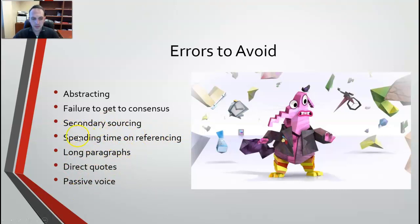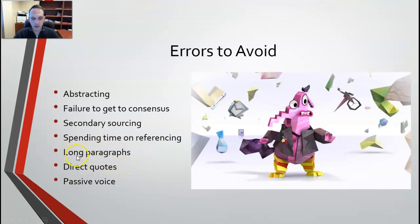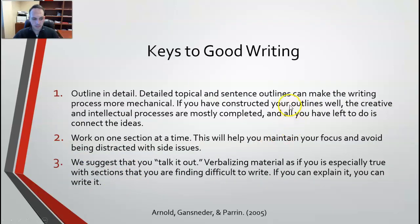Some more minor things: when writing at this point, do not spend a lot of time on referencing and formatting — you can fix that later. Use abbreviated references or EndNote's temporary reference feature which is really helpful. Also avoid long paragraphs, direct quotes, and passive voice. These get in the way. There's really no need for direct quotes in this sort of writing — you can go as far as to say never use direct quotes. Too many 'to be' verbs are a sign of passive voice.